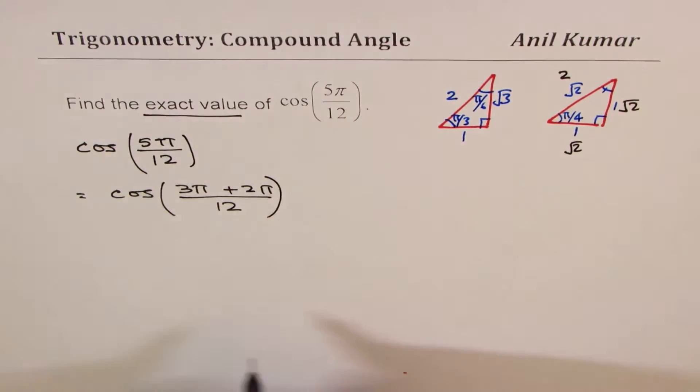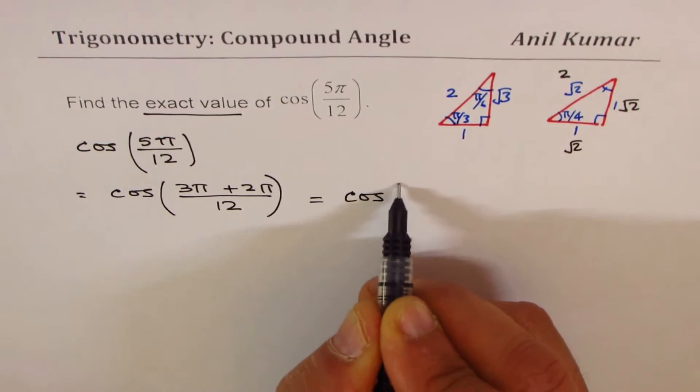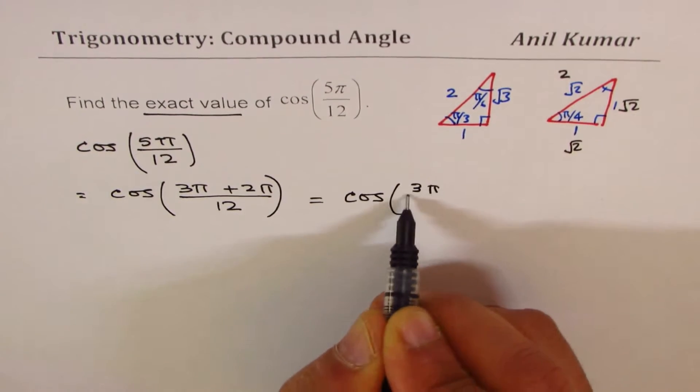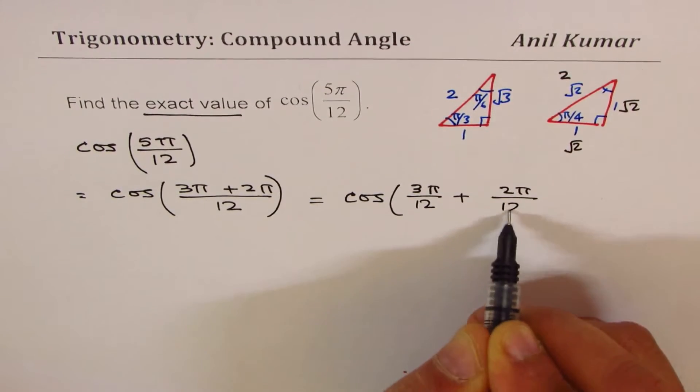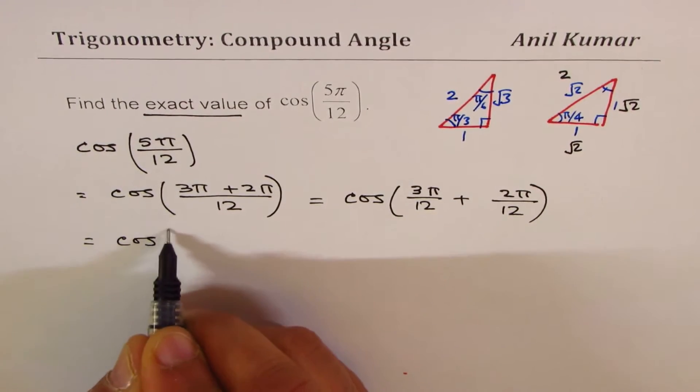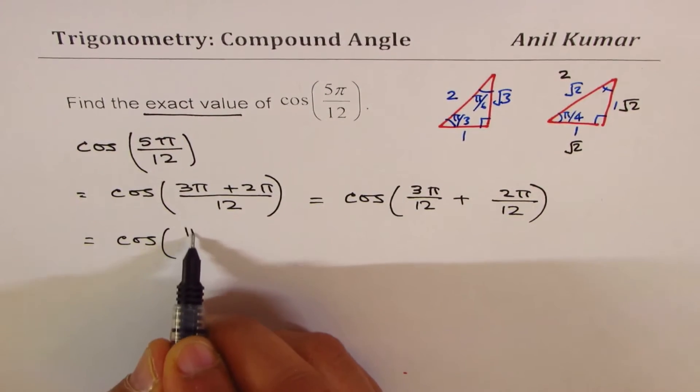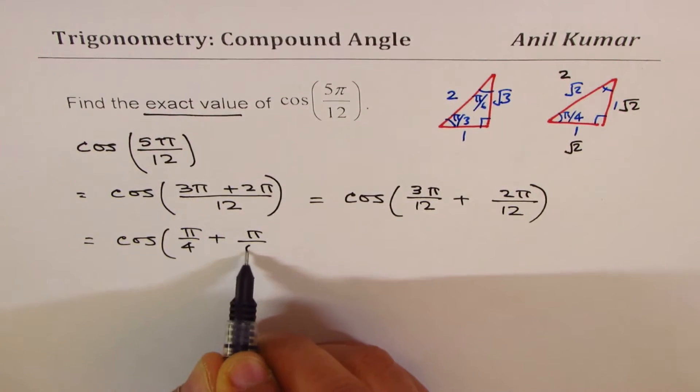Does it make sense? So that really tells you that you could actually write this as cos(3π/12 + 2π/12). Correct? Now 3π/12 could be written as... it goes 4 times, right? So π/4 plus π/6.